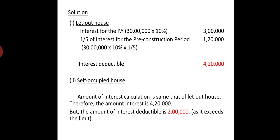One-fifth of the total pre-construction interest comes to Rs. 1,20,000. So for the self-occupied house, you have to calculate the interest. The interest on home loan for a self-occupied house gives the resulting loss.